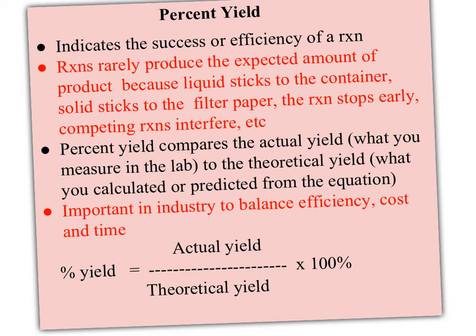So percent yield is calculated just like any percentage. You take what you have, the part that you're interested in, out of the total times 100%. So the part we're interested in is what we actually made or yielded compared to what we expected to make. That's considered the whole.